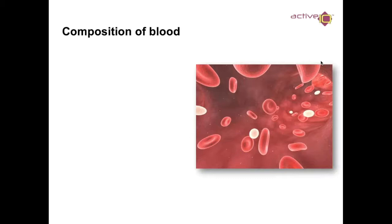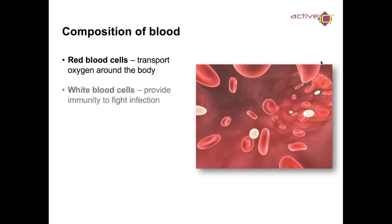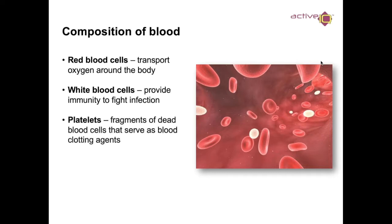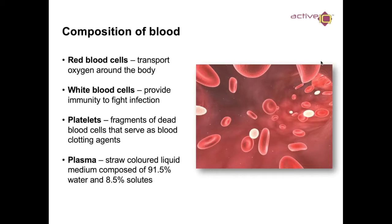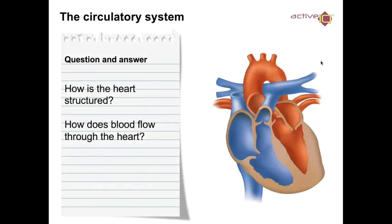So the composition of blood — how is blood made up? We have red blood cells, which help transport oxygen around the body. Then white blood cells, which provide immunity to fight infection. We have platelets — fragments of dead blood cells that serve as blood clotting agents. And then we have plasma, a straw-coloured liquid composed of 91% water and 8.5% solutes.